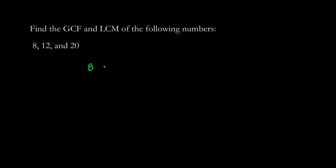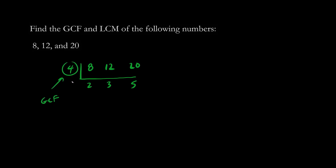Let's try this question again, pulling out a four instead of a two. We can be more efficient by pulling out the GCF four right from the get-go. Four times two is eight, four times three is twelve, four times five is twenty. We have all prime numbers here, so our GCF is four. The LCM we multiply across: four times five is twenty, twenty times six is one hundred twenty. So one hundred twenty is the LCM.